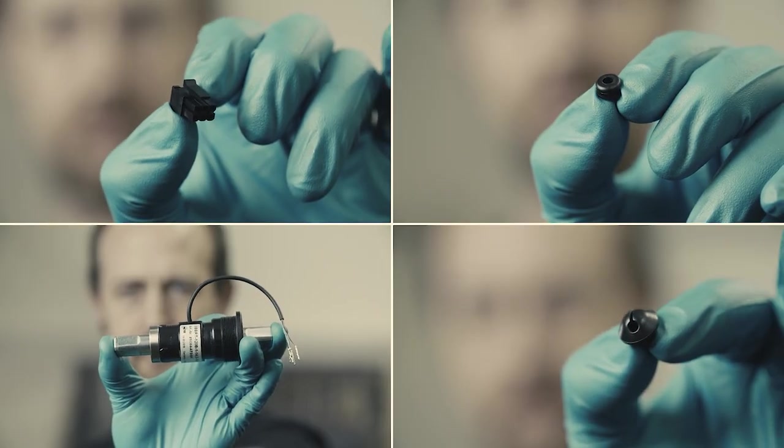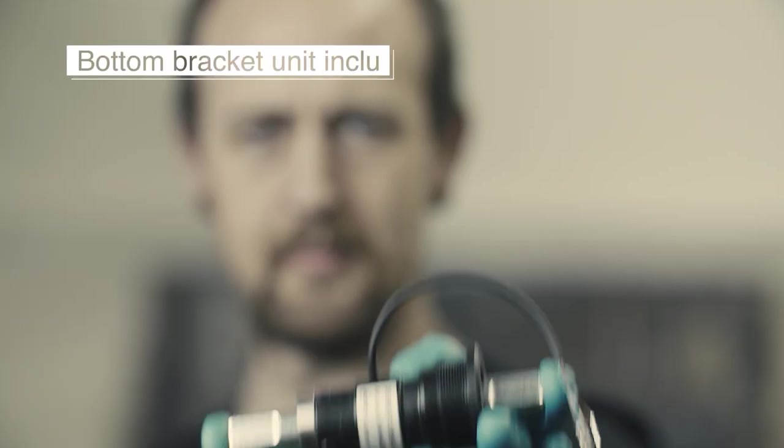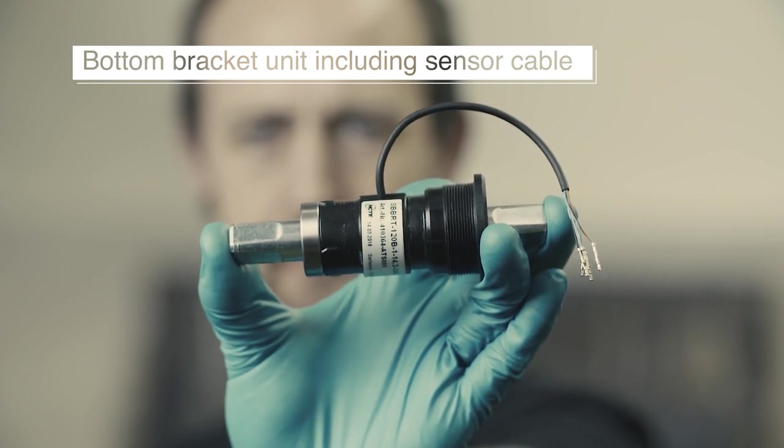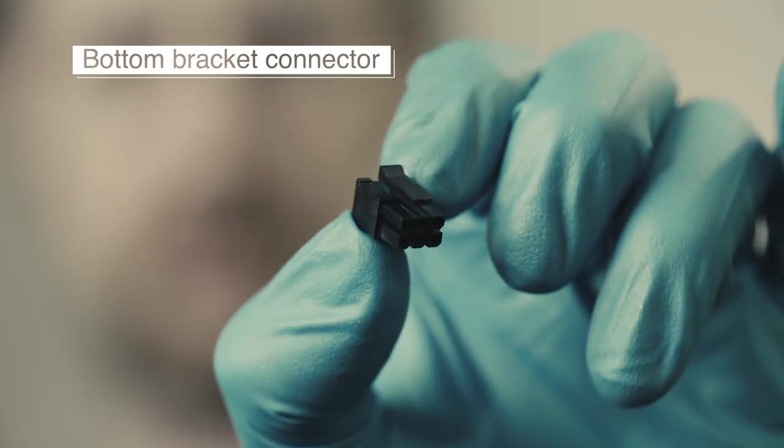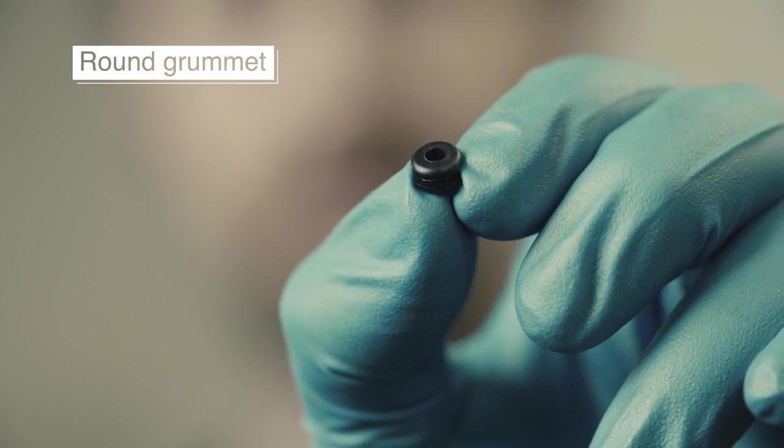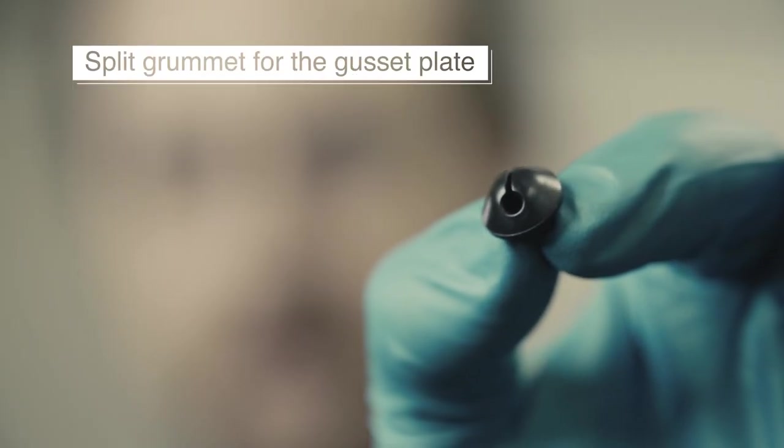Make sure you have all the components required to perform the replacement: bottom bracket unit including sensor cable, bottom bracket connector, round grommet and split grommet for the gusset plate.